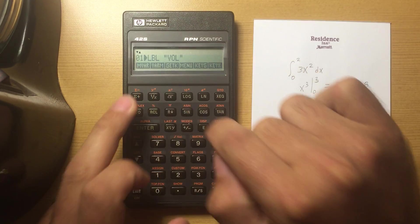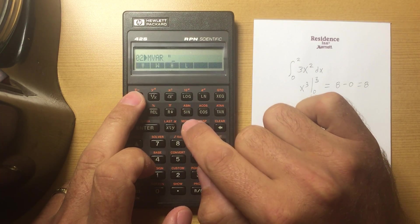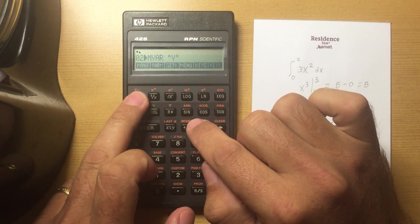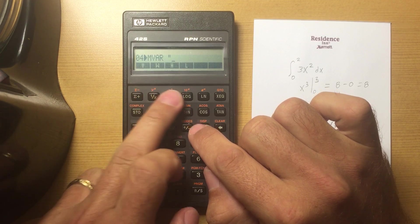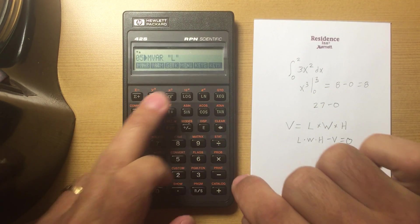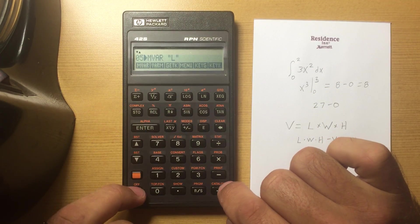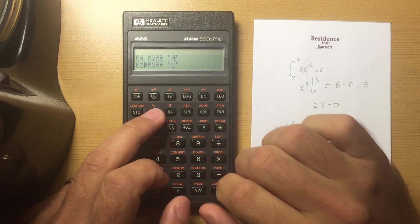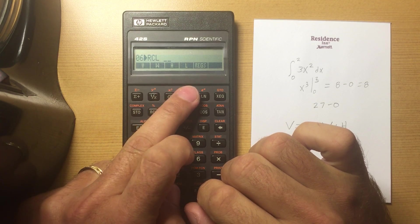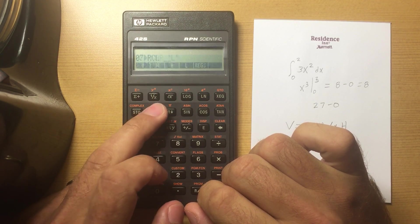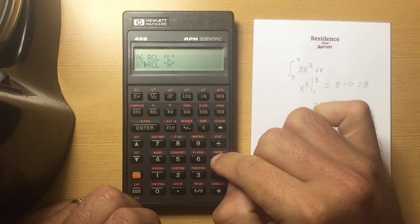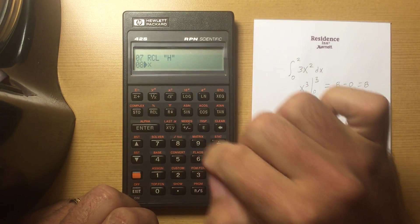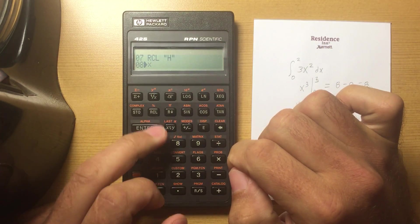and there's the M variable. Enter M variable V, variable W, H, and L. Now I'm going to recall those—recall length, recall H, multiply those together. I could also have done a recall times.